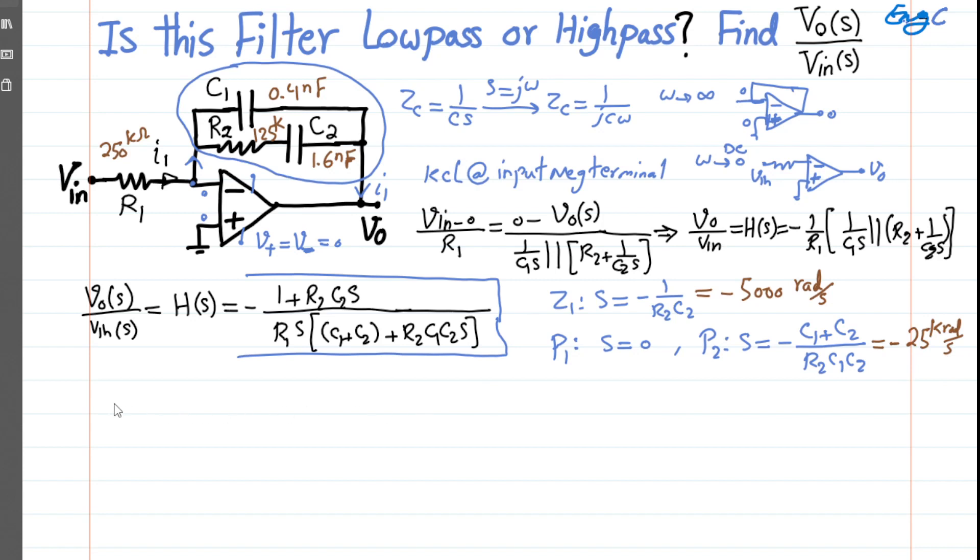And for the pole that we have, if you substitute the values that are provided, then it becomes -25,000 radians per second. Okay, if you're interested to see, now because of the position of poles and zeros that we have, the circuit response in terms of magnitude Bode plot. In magnitude Bode plot, we are plotting 20·log₁₀(magnitude of H(ω)) by substituting S with jω in the formula for transfer function.